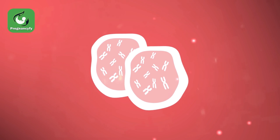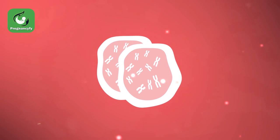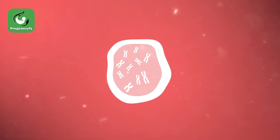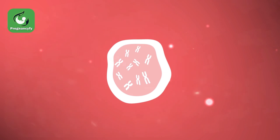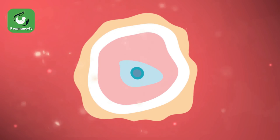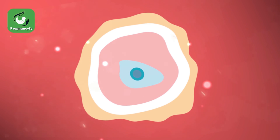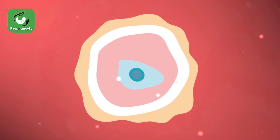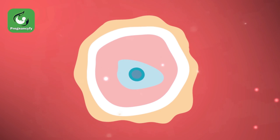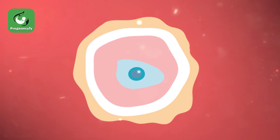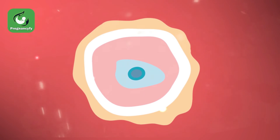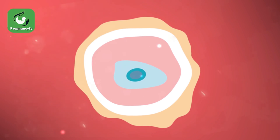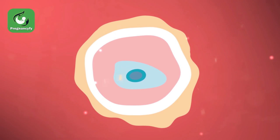By this time though, your developing baby is just a little ball of cells, but it is growing amazingly fast. It has a fluid-filled cavity that will become the amniotic sac, an outer cell mass that will become the placenta, and an inner cell mass that will become the embryo.